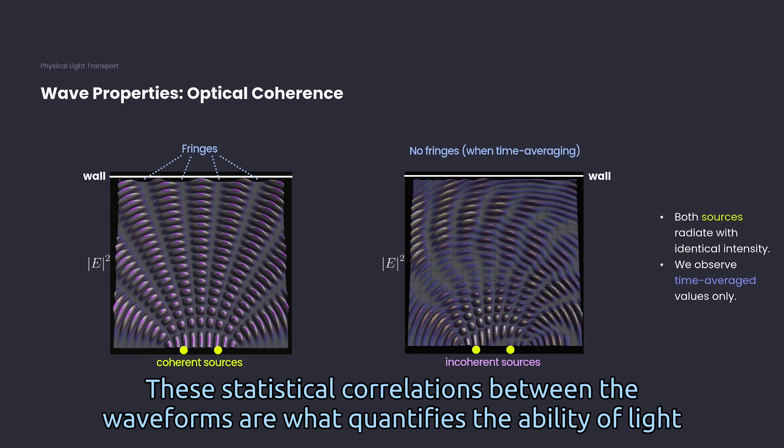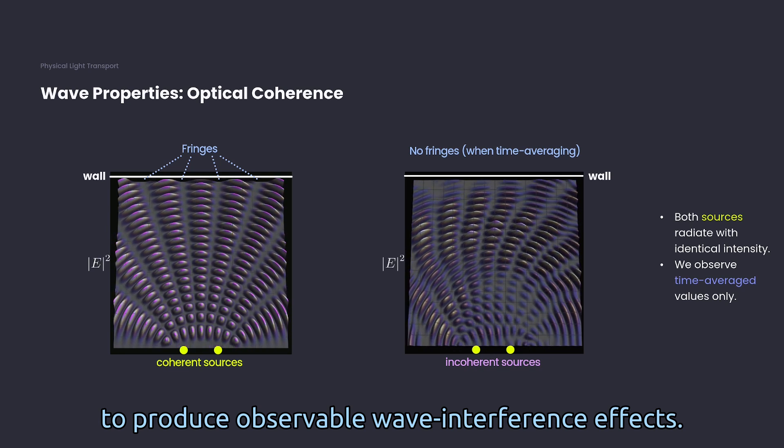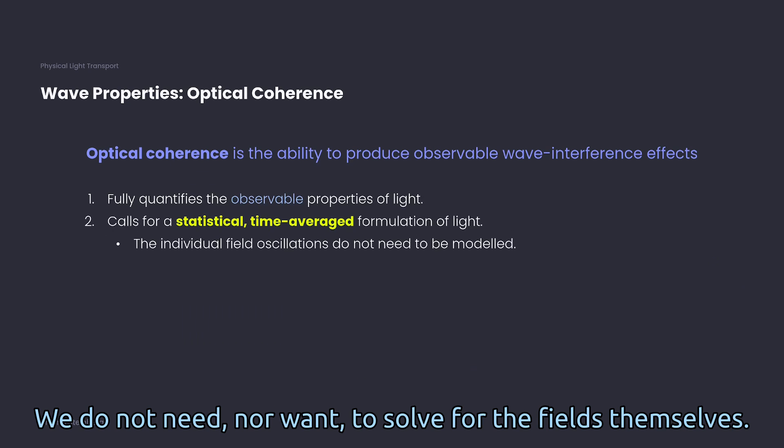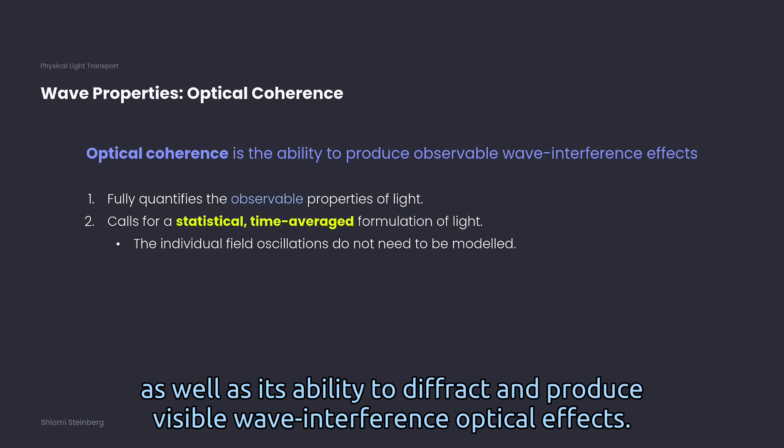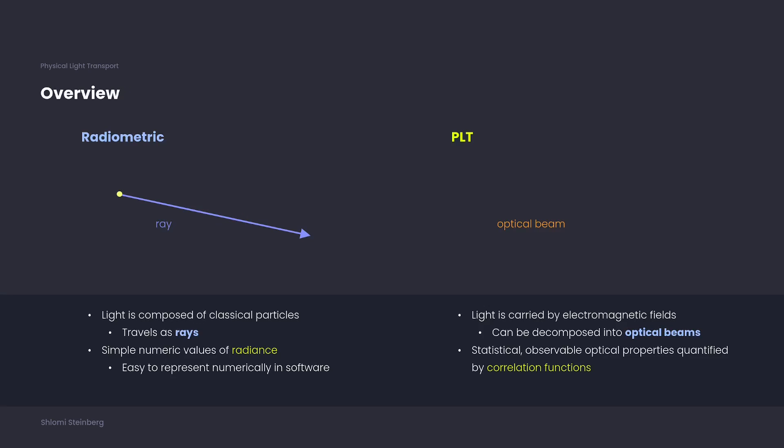These statistical correlations between the waveforms are what quantifies the ability of light to produce observable wave interference effects. And this statistical property of light is known as optical coherence. We do not need nor want to solve for the fields themselves. The second order statistical properties of light fully describe the observable properties of light, as well as its ability to diffract and produce visible wave interference optical effects. This is the primary motivation behind the formulation of PLT.